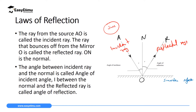The line which divides the incident ray and the reflected ray is always 90 degrees to the surface and it's called the normal line. It's not a ray — it's a normal line.